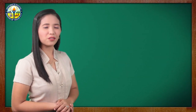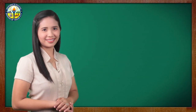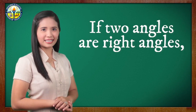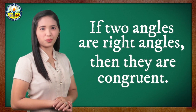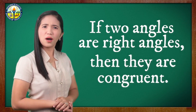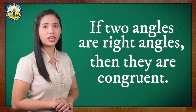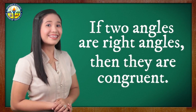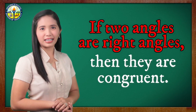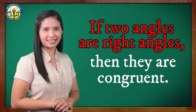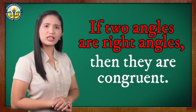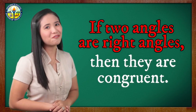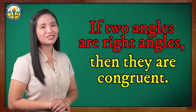How about this example? If two angles are right angles, then they are congruent. The hypothesis is 'two angles are right angles,' and the conclusion is 'they are congruent.'